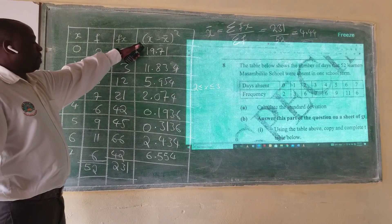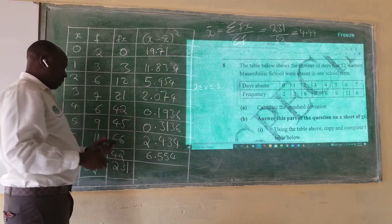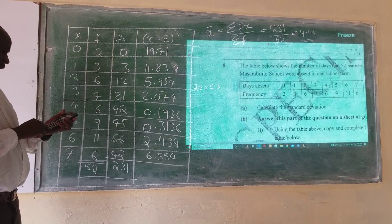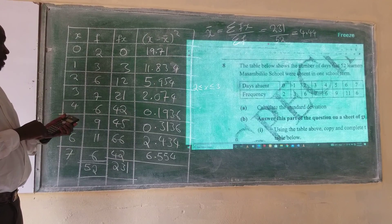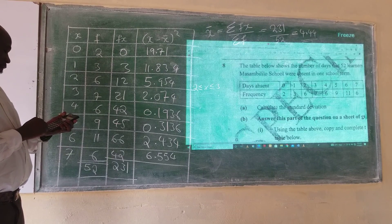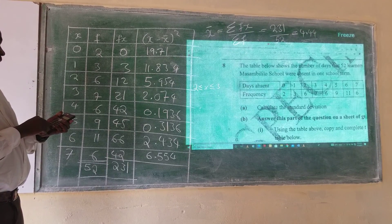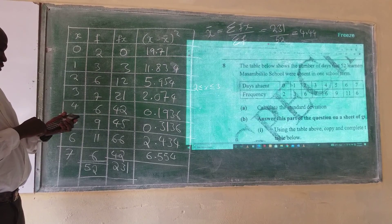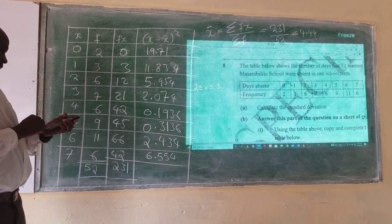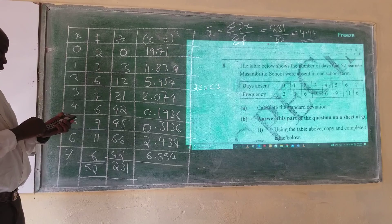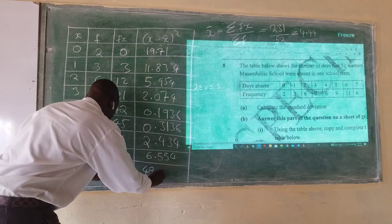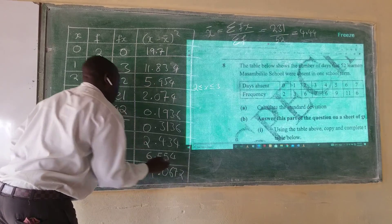The next step is to sum all the values in the (x − x̄)² column. So we add: 19.71 + 11.834 + 5.954 + 2.074 + 0.1936 + 0.3136 + 2.434 + 6.554, and the total comes to approximately 49.0672.